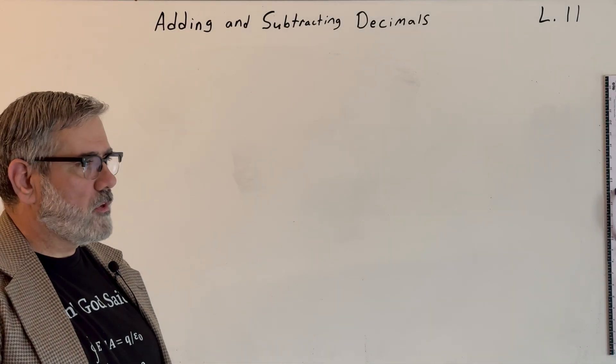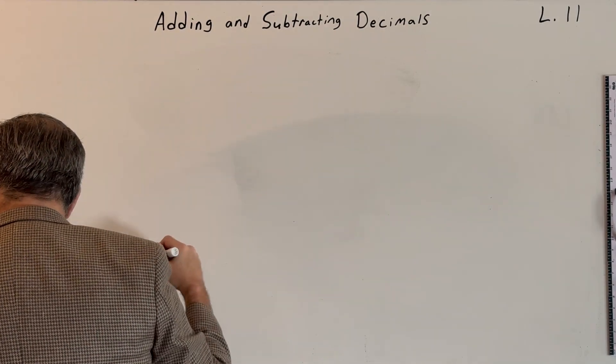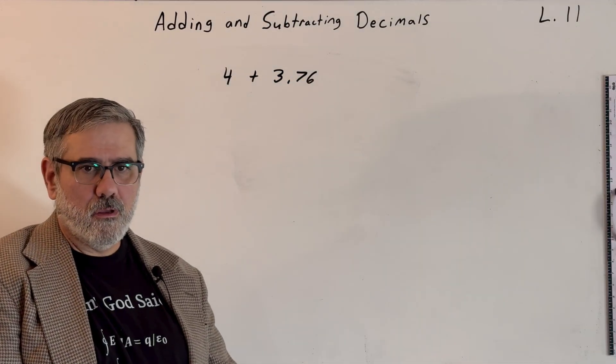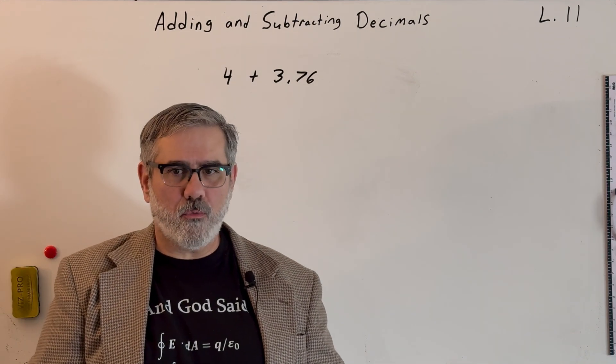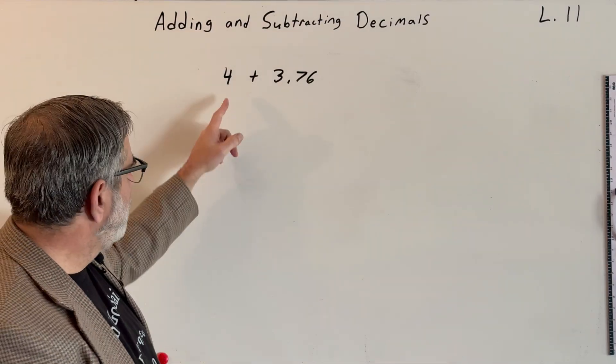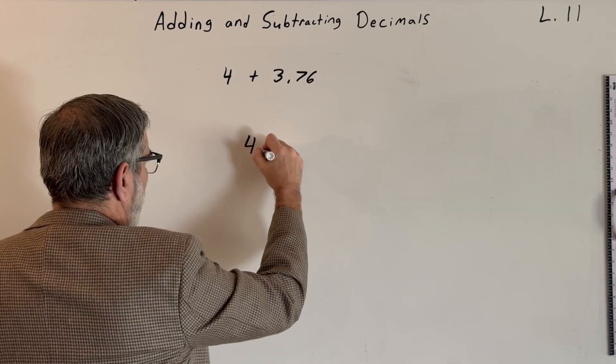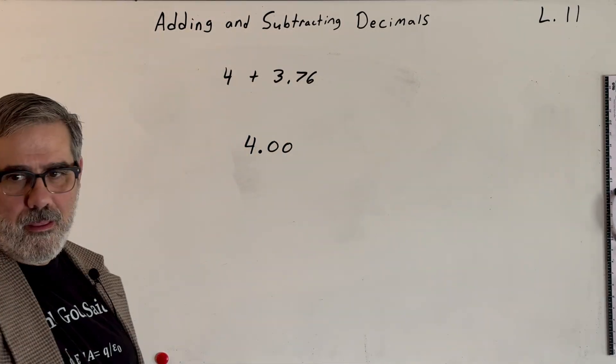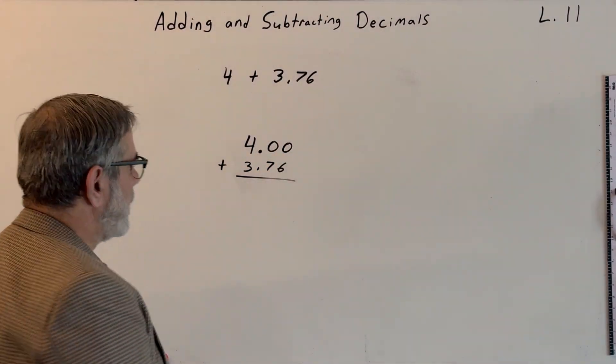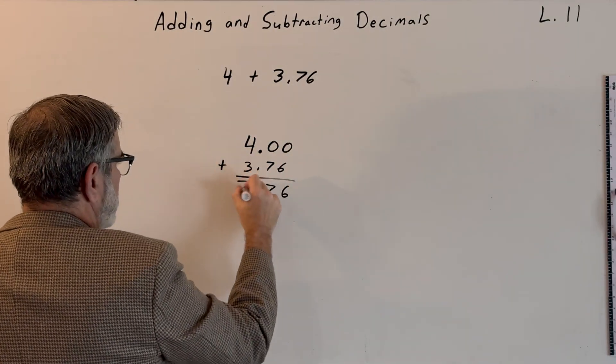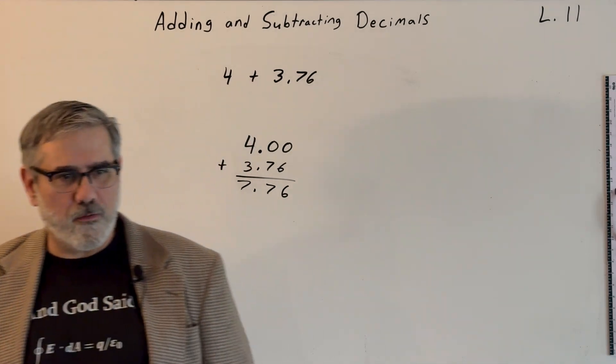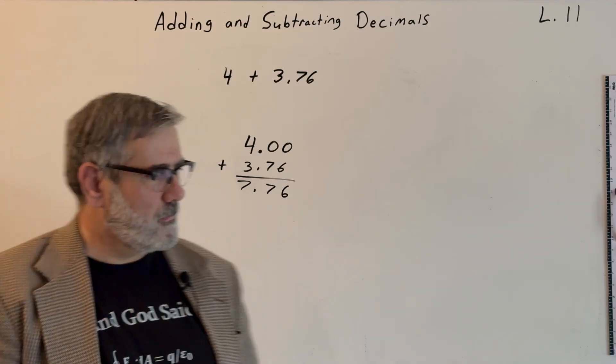So what other problems might we run into? Another one is what if we have a whole number plus a decimal? So four plus three point seven six. So what do we do in a case like this? Well, it's a lot like when we were doing fractions and we might have a whole number that we're adding to a fraction. We have to remember that we can rewrite that number as a fraction by simply putting it over a denominator of one. Here all we have to do is just add a decimal point to it. This is four ones, which means that we're going to write it like this. Four point, and if you want to put a zero or two after it, you can. So we'll rewrite four as four point zero zero. And then we'll add to that three point seven six. And now everything works out exactly as before. Zero plus six is six. Zero plus seven is seven. Four plus three is seven. We get a final answer of seven point seven six.